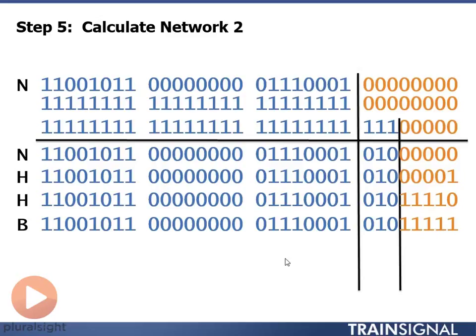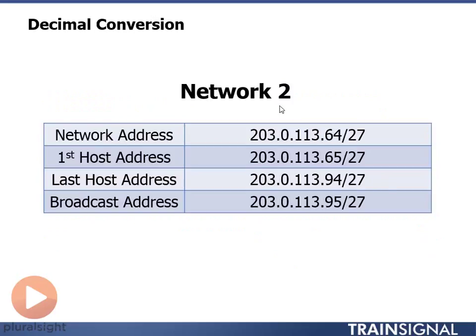Let's use the eight bit sections now to convert this back to decimal, and we get network number two is 203.0.113.64 slash 27. First host, .65, last host, .94, and my broadcast address is .95.